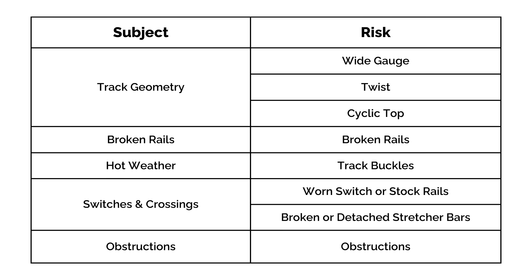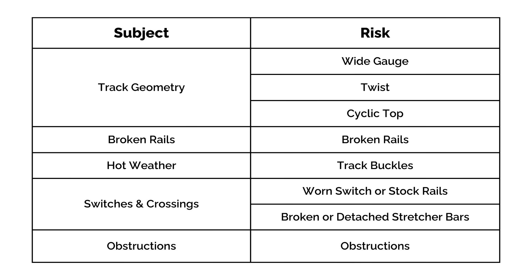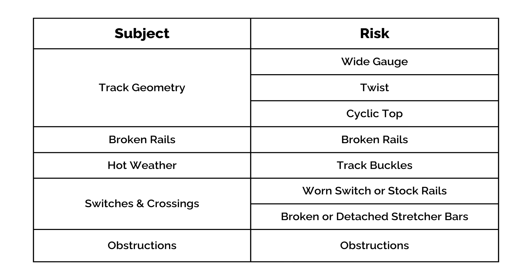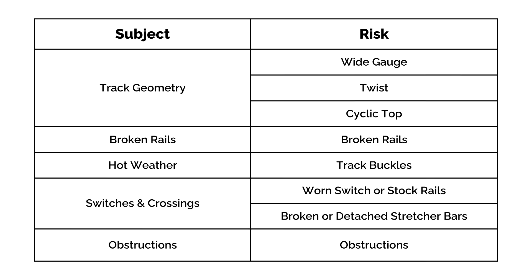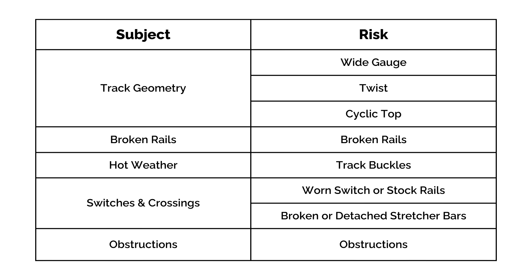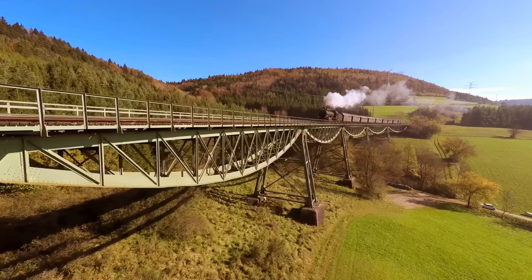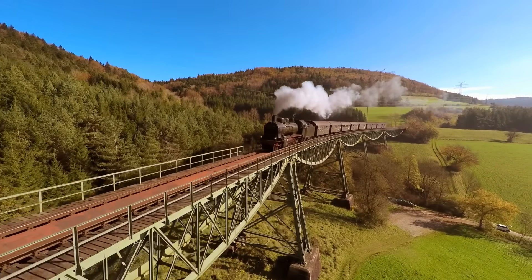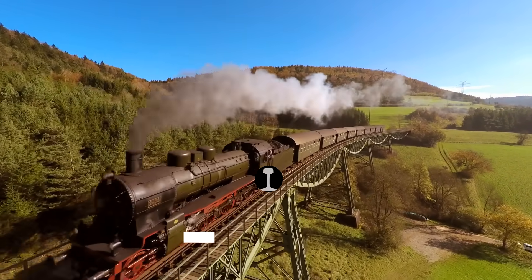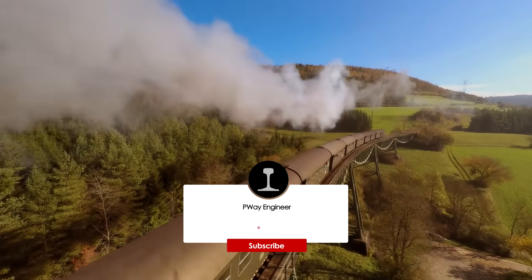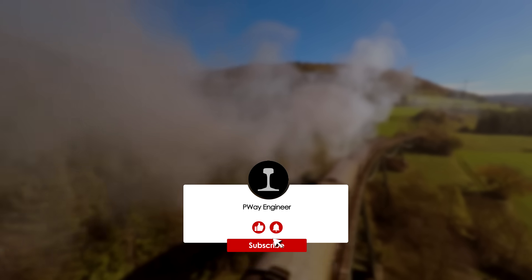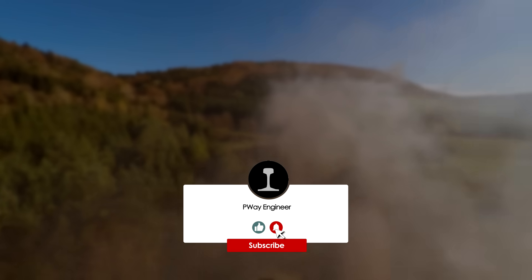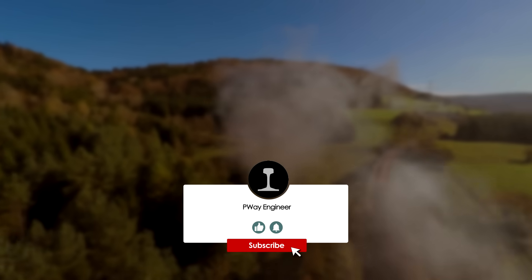And that's it — the eight track-related ways a train can derail, grouped into five subject areas. If you want me to do a video on signalling-related causes, let me know in the comments. Otherwise, here are some of my other videos I think you might find interesting.